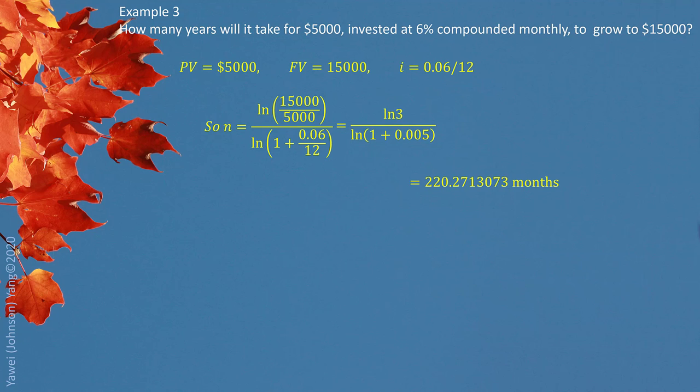220.2713073 months. The reason here is months because interest was compounded monthly. The question is looking for years. So we switch this one to years by dividing by 12. Each year has 12 months. Again, if we try to answer the whole number about years, we only rounded up. 18.36 we rounded up to 19 years. We do not round down in this situation.